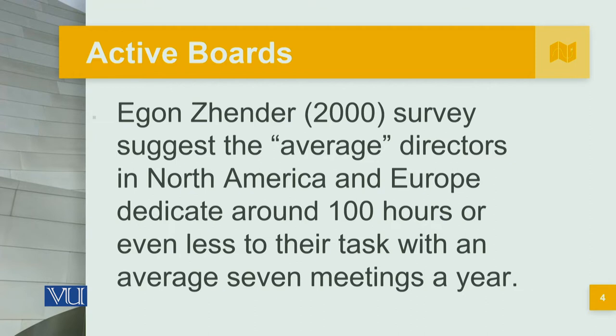Egon Zender in the year 2000 conducted a survey suggesting that the average director in North America and Europe dedicates around 100 hours or even less to their task, with an average of seven meetings in a year. So in only seven meetings, they dedicate about 100 hours — that is the average director.